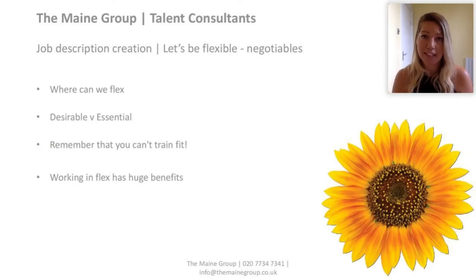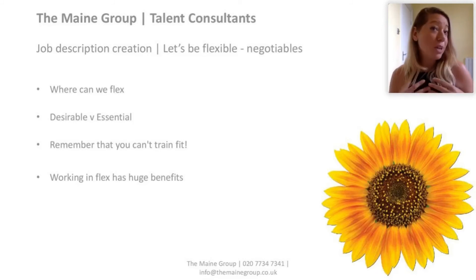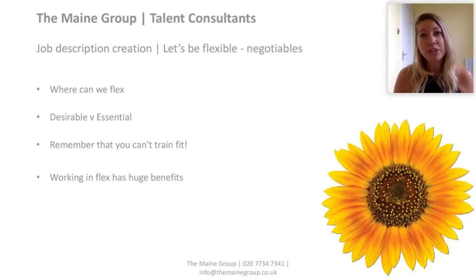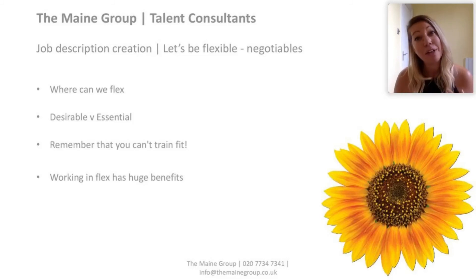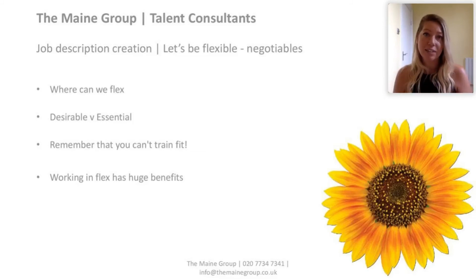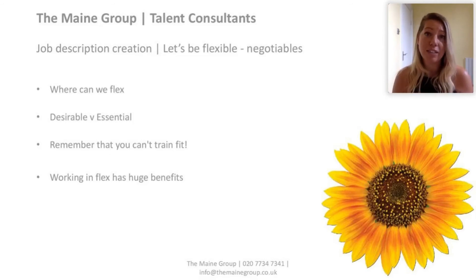Next is where you can think about where you can be a bit flexible. We've had our essentials, and now we're going to think about what is desirable — what we would love this person to have but don't absolutely need. For example, somebody might have exactly the right temperament, be a strong culture fit, and have exactly the experience you're looking for, but may have used different software in their last role. Software can be trained, but a lot of other things can't. Think about where you can work in some flex, because all the variables you're looking for might not exist in one person, and this flexibility can be the difference between making a successful hire or not.